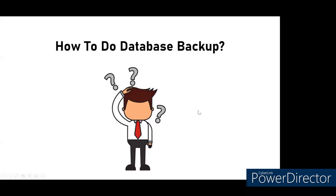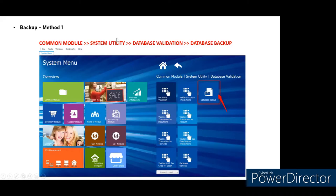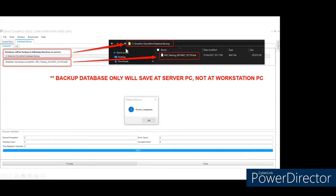Sometimes the update process may not be stable and could cause database issues, so always back up first. To back up in DynamoD, go to the Common Module, System Utility, find Database Validation, then click Database Backup. You'll see the backup location and file name showing date and time. Note that the database resides on the server/main PC, not on workstation PCs.